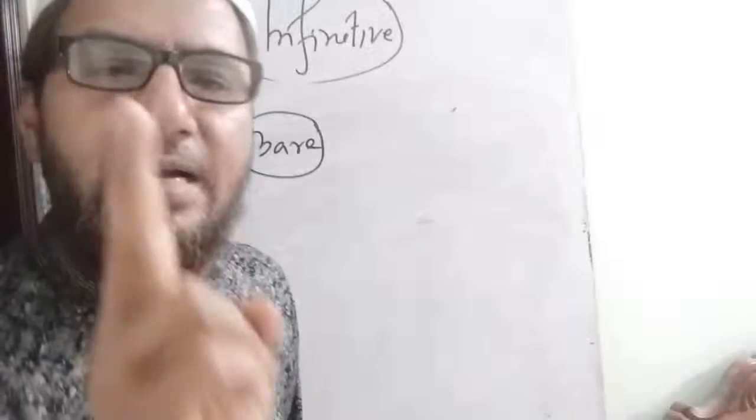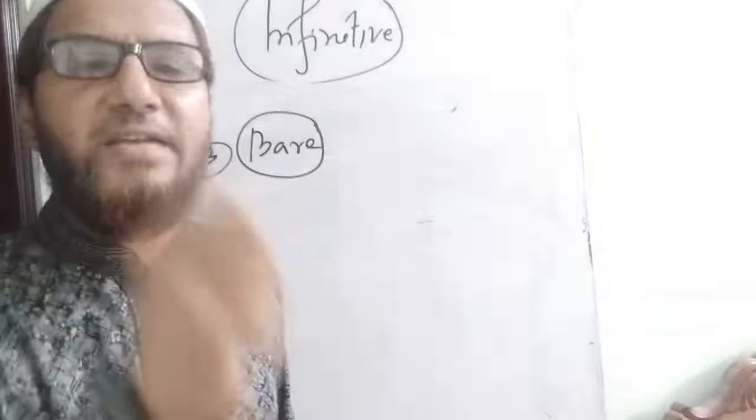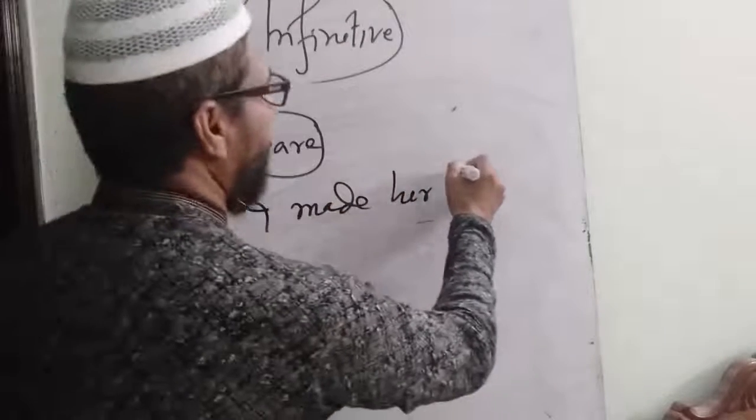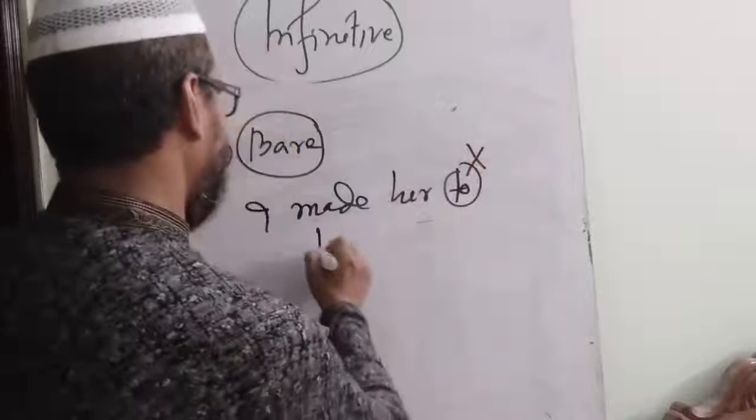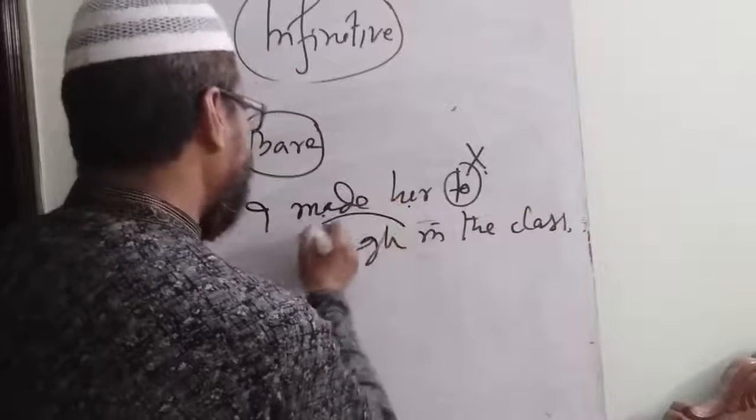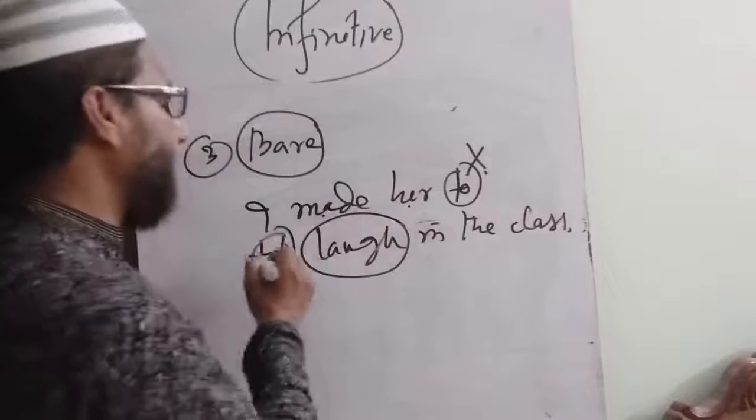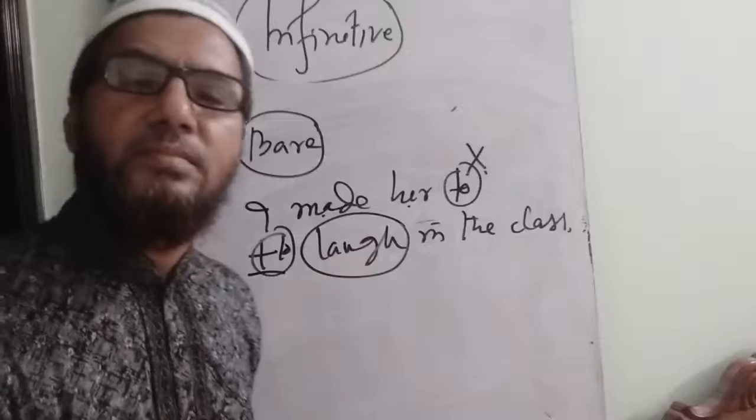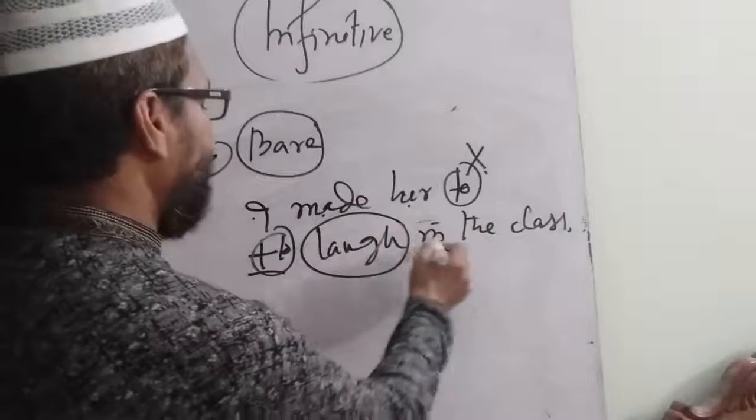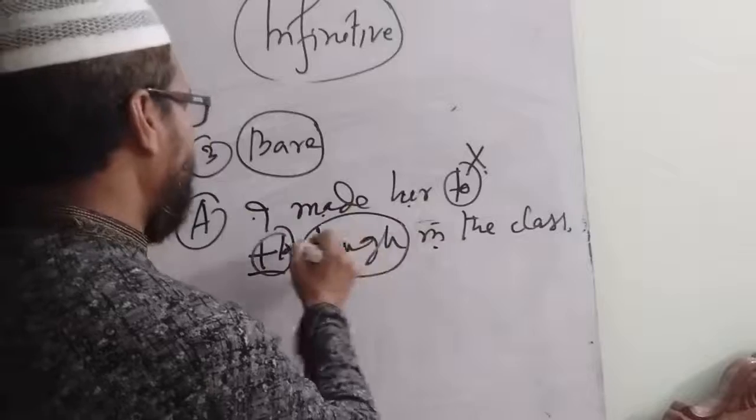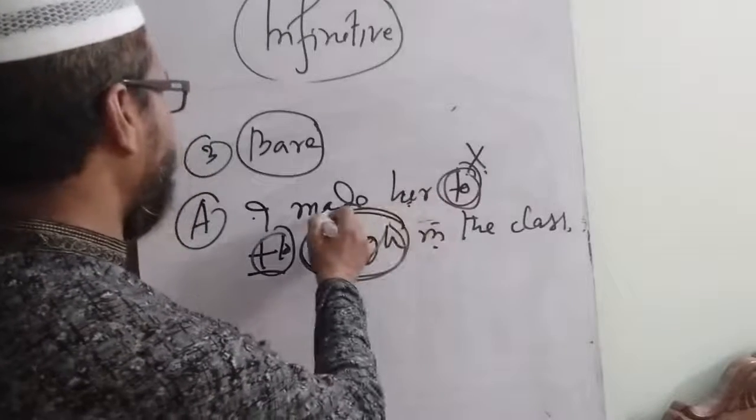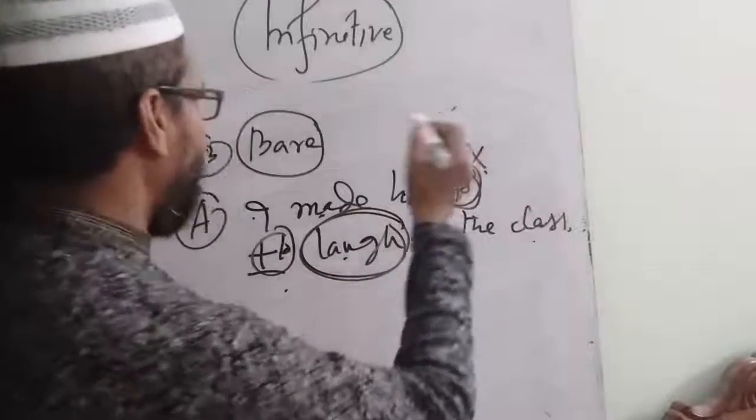Bare infinitive example: I made her love in the class. Active voice uses bare infinitive - no 'to'. In passive voice, we use 'to': She was made to love in the class by me. This is the same way.